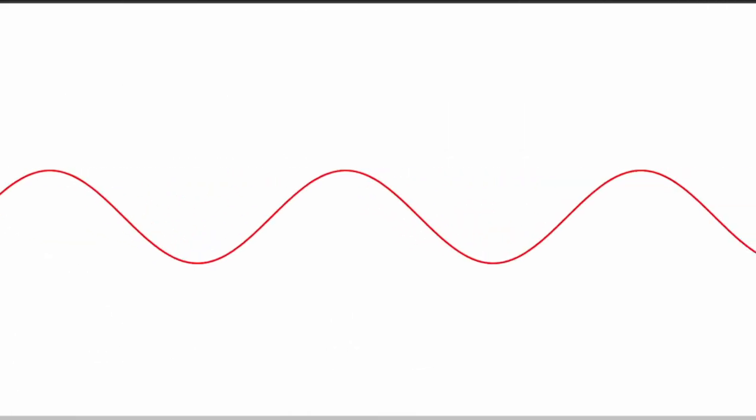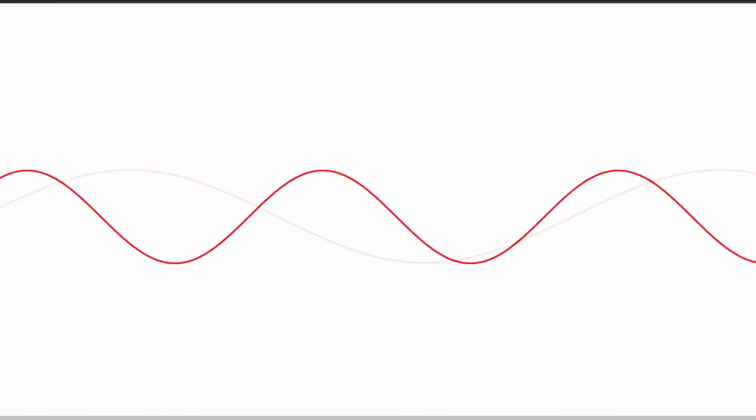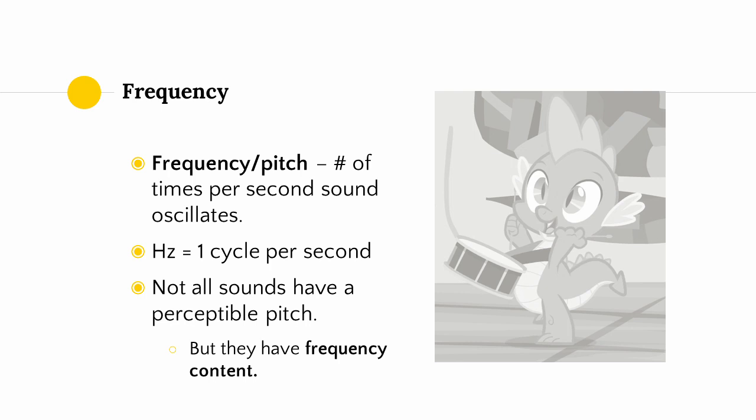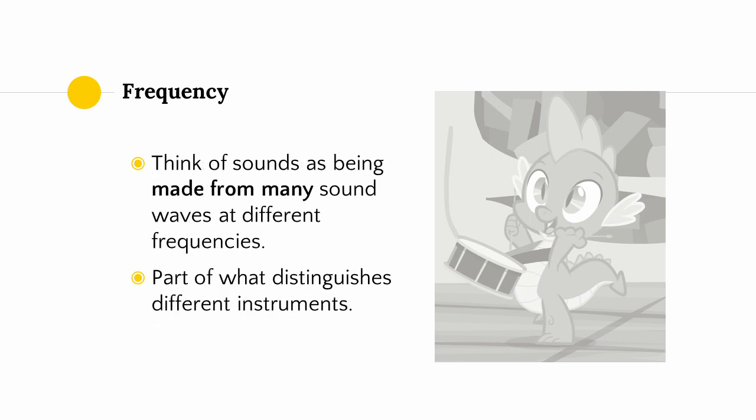You can see the animation here — a wave of high frequency and now a wave of low frequency. Not all sounds produce a perceptible pitch; for example, a drum has no perceptible pitch in general. But these sounds still have frequency content — they can be thought of as being composed of many different sound waves at different frequencies. Most instruments have frequency content beyond the pitch that we perceive, and that's what makes them sound like those instruments.